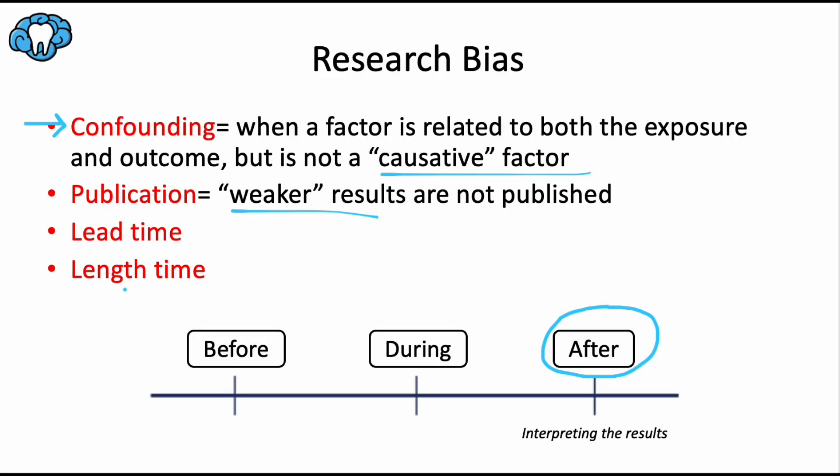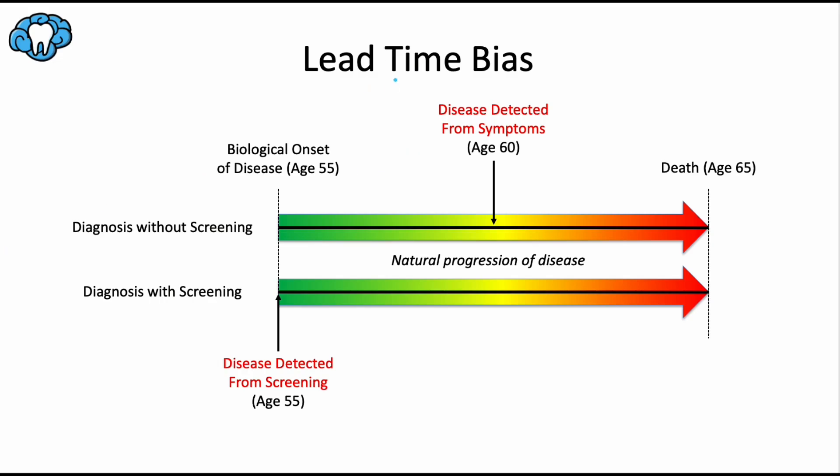Lead time bias and length time bias are two types of biases that can affect data interpretation in studies, especially in the context of disease detection and treatment — and they're often confused with one another. Lead time bias occurs when earlier detection of a disease, typically through screening, is confused with an increased survival time, even though the earlier detection does not actually change the natural course of the disease. When a disease like cancer is detected earlier, the time from diagnosis to death seems longer, but this does not necessarily mean the patient's overall life expectancy is increased — it only means the time between detection and death is extended.